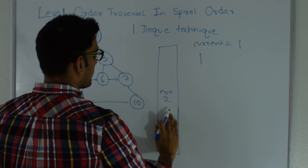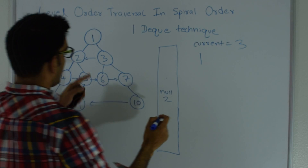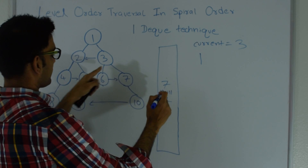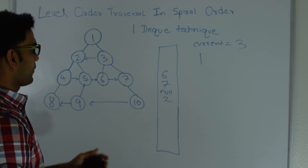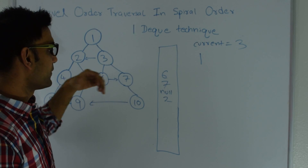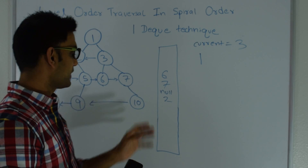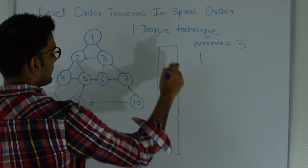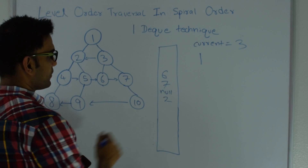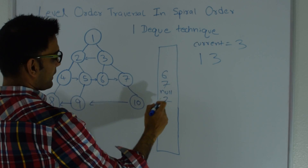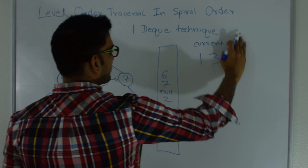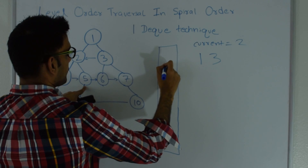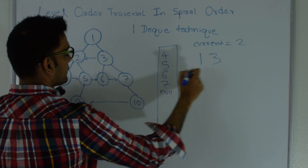I pop 3 from the bottom — current becomes 3. If 3 has a right child I put it at the top; if 3 has a left child I put it at the top. When popping from the top we look for left child first then right, and when popping from the bottom we look for right child first then left. So 3 gets 7 and 6 added to the top, and I print 3. Then current becomes 2: 2 has a right child added to the top, and a left child added to the top, then I print 2.